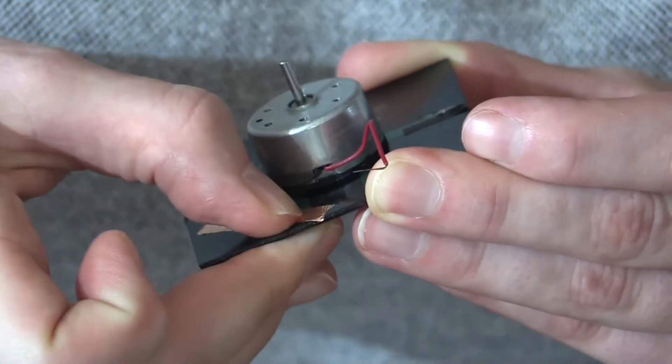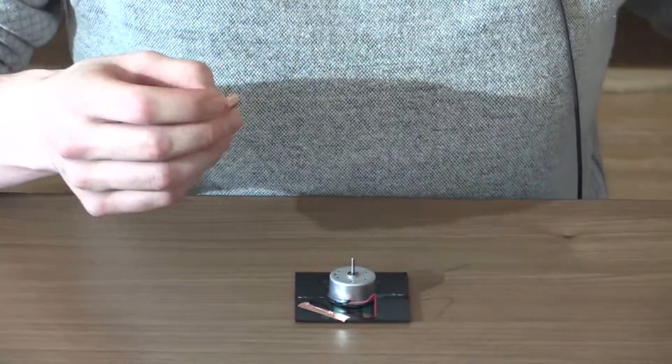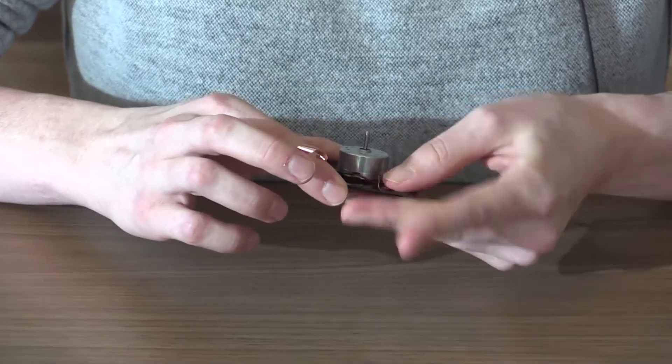You may notice that over time, the adhesive on the tape starts to wear off and the tape may peel back. This will slow your solar spinner down, but you can always just press down firmly or use a different tape to go over top of it.